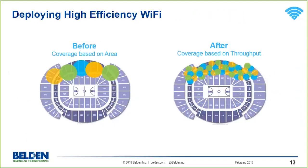What this really means is that instead of looking at coverage over area, we're going to need coverage for throughput. We'll want more access points in areas with more people so they can have the throughput needed. 802.11ax will help, but as more people use AX technology — especially with calling over Wi-Fi — they'll want to be closer to the antenna, which will probably mean more access points being deployed than before.